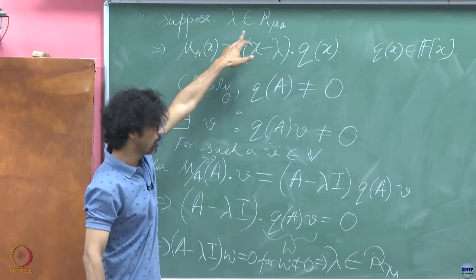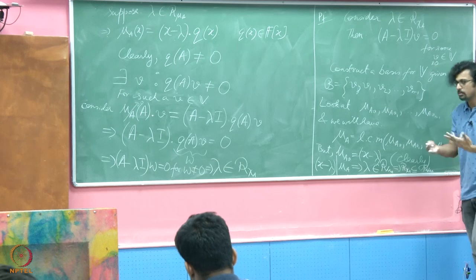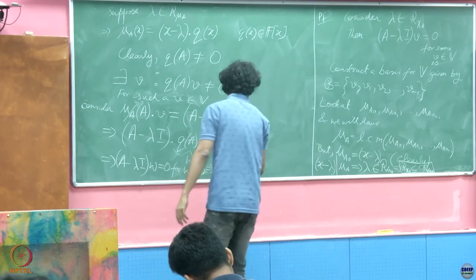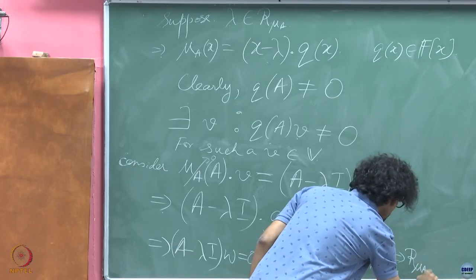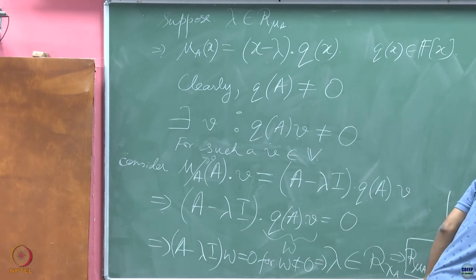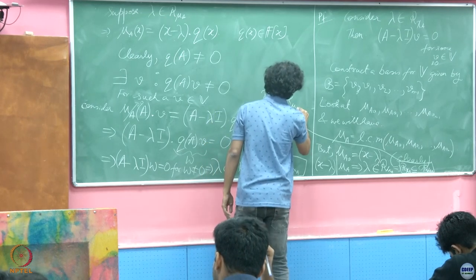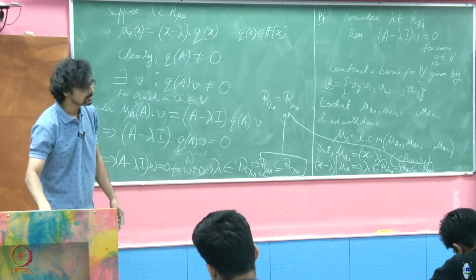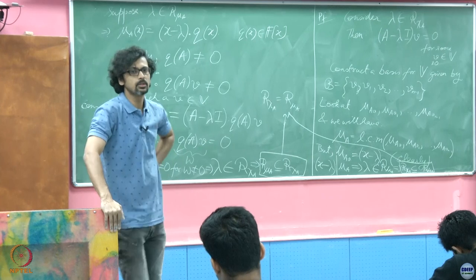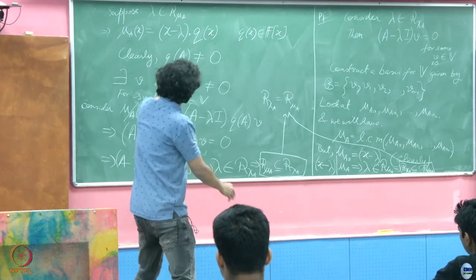We started with something in R(μ_A) and it ends up being in R(χ_A). Earlier, we started with something in R(χ_A) and saw it belongs to R(μ_A). This shows both-sided containment. Therefore R(χ_A) = R(μ_A): the roots of the minimal and characteristic polynomials, discounting multiplicities, are one and the same. A student asks: what is the argument for there existing such a V?